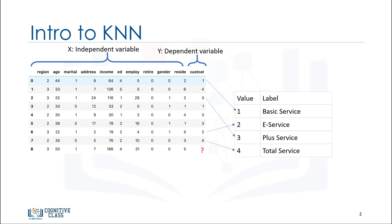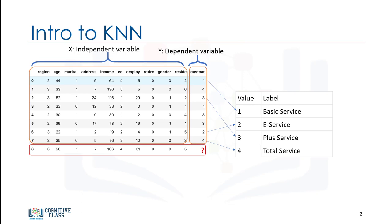That is, given the dataset with predefined labels, we need to build a model to be used to predict the class of a new or unknown case. The example focuses on using demographic data such as region, age, and marital status to predict usage patterns.